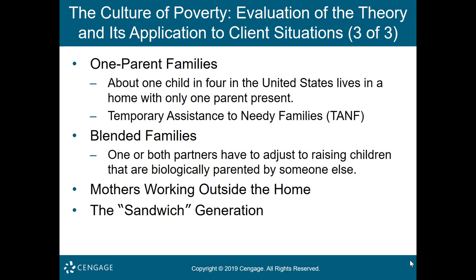White mothers who live in poverty most likely have been married — their current single status results from divorce, separation, or death of a spouse. African American mothers in poverty, however, are more likely to have born their children without having been married. Many people who divorce have children, and most people who divorce remarry within a few years. Thus a variety of blended families are being formed in our society. A blended family is basically any non-traditional configuration of people who live together, are committed to each other, and perform functions traditionally assumed by families — such relationships may not involve biological or legal linkages.